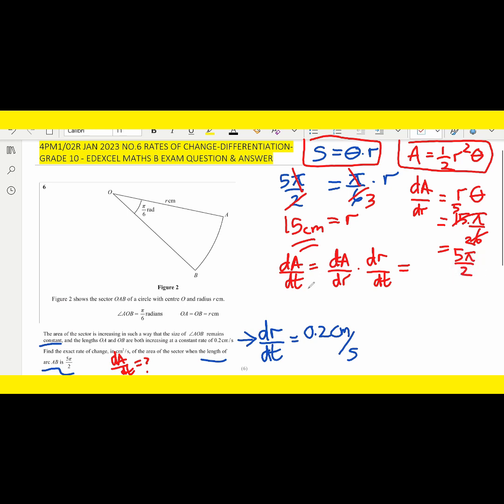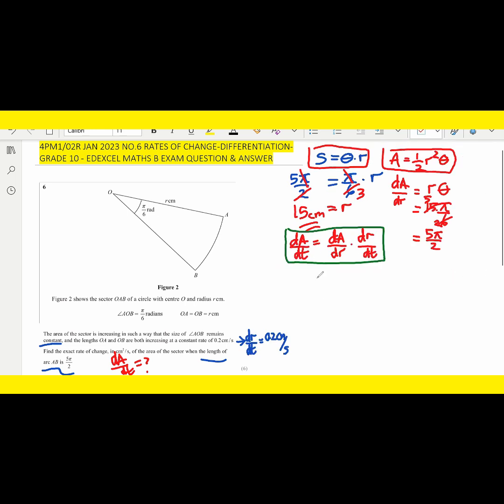We put inside here, dA/dr is 5π/2, and dr/dt is 0.2. Then we cross-cross, becomes 0.1 and 1. It'll become 5 times 0.1 is 0.5π, and the unit is cm² per second. Or we can write it as π/2 cm² per second. That's the answer.